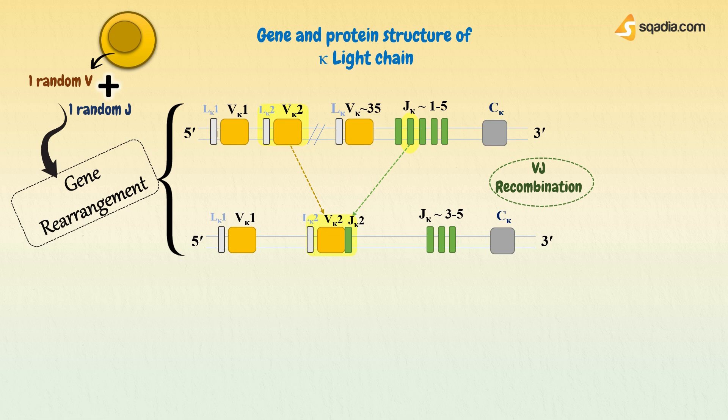As each individual B cell uses only one V and one J segment, different B cells will choose different V and J segments at random. Therefore, the population of B cells in an individual will utilize all the different V and J segments. For example, one B cell can choose V kappa 34 and J kappa 1, while another B cell can choose V kappa 27 and J kappa 4, and so on.